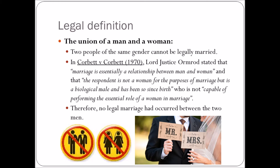One of the key cases in relation to this is Corbett v Corbett, which involved a man and a transgender woman who got married. It was then discovered that the transgender woman was originally born as a man. They sought a divorce from the court, and Lord Justice Ormrod said marriage is essentially a relationship between a man and woman, and that the respondent is not a woman for the purpose of marriage, but is a biological male and has been so since birth.